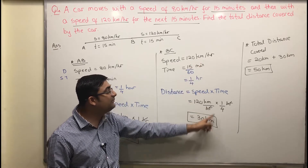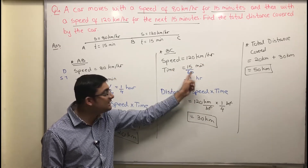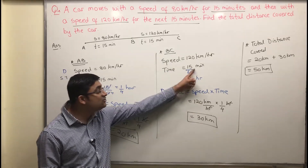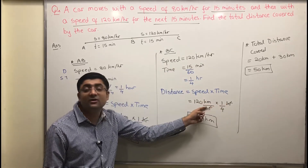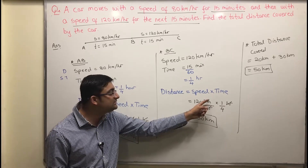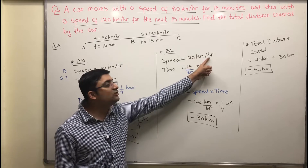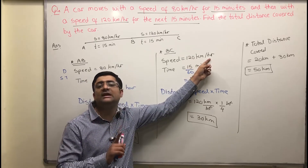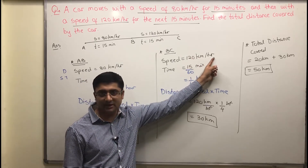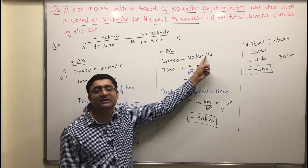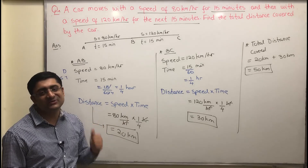Remember, don't forget to change your units. Because speed is in kilometers per hour, distance has to be in kilometers and time has to be in hours. Since time was given in minutes, we converted to hours. If you put in minutes, the units won't cancel — you'd get kilometer-minutes per hour, which doesn't work. Whatever the units of speed, take distance and time accordingly. This is how you solve this question.